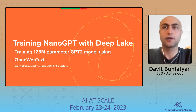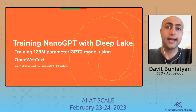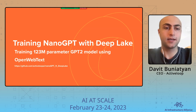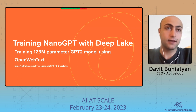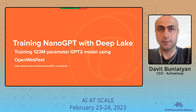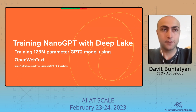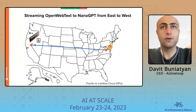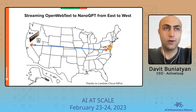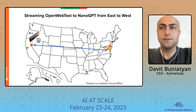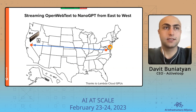Let me show how this works with nanoGPT. nanoGPT is a simple boilerplate code built by Andre Karpathy that can run very efficient GPT training on a multi-GPU setup. The model used is GPT-2, a fairly small one for demonstrative purposes, and the dataset is Open Web Text. What we did is store the data in US East, spin up a machine in US West, and then stream the data from US East to US West.